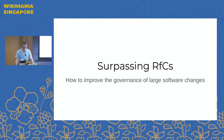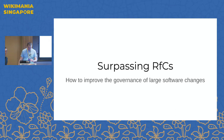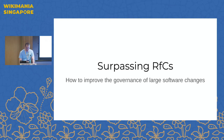I would like to talk to you about what problems we have with software RFCs and how I think we can solve them. To be clear, this is just about RFCs that are used for software changes, so I'm not talking about other kinds of RFCs, like policy changes on Wikipedia.